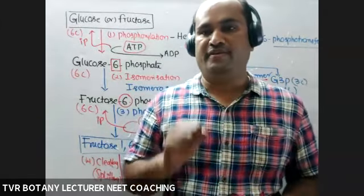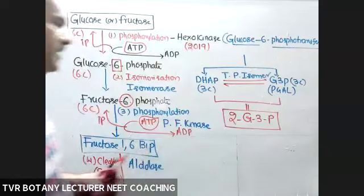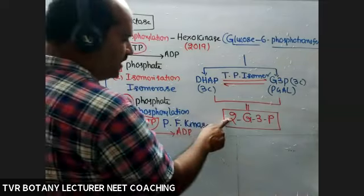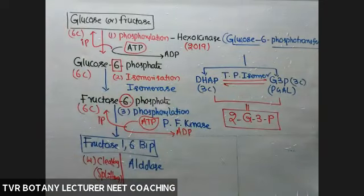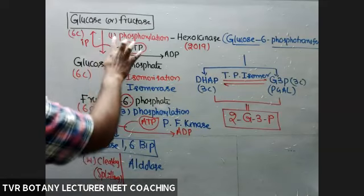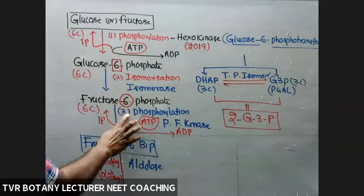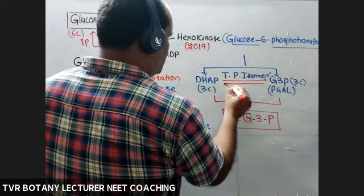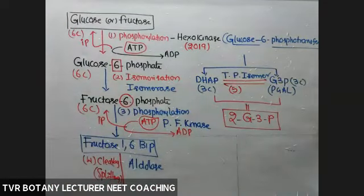Dear students, now we are going to discuss the remaining part of glycolysis, starting from two molecules of G3P. What about the fate of our two molecules of G3P during the remaining reactions of glycolysis? So far, five reactions are completed, and still five reactions are pending. Now what about those remaining five reactions?